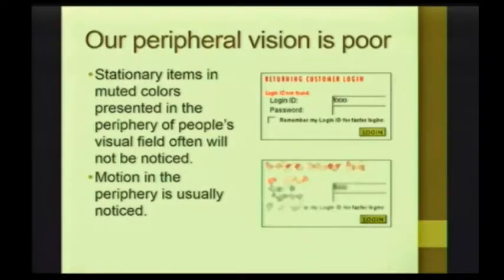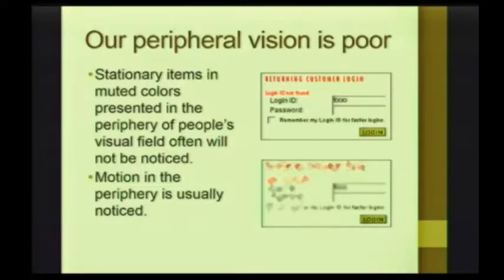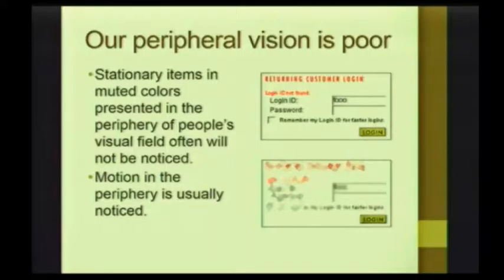There are actually several reasons for that. I'm going to talk about two of the main reasons. One we've already talked about, which is our locus of attention. The other one — this actually shows you an example of it — our peripheral vision really sucks. It doesn't matter how wonderful your eyesight is, your peripheral vision is quite poor. We need to worry about what we're focusing on.